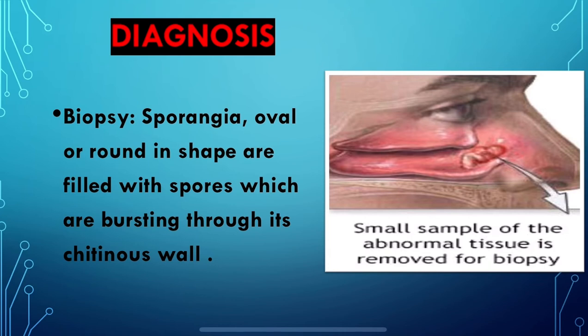For diagnosis, a biopsy is done. In the biopsy, the sporangia — which contain the spores — are seen to be oval or round in shape, filled with spores that are bursting through the chitinous wall. A small sample of the abnormal tissue is taken for biopsy.